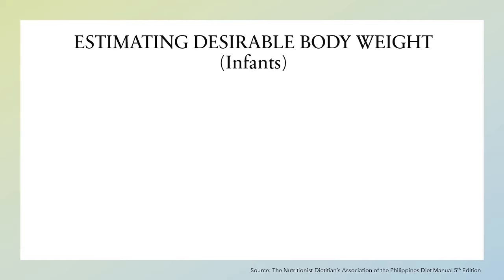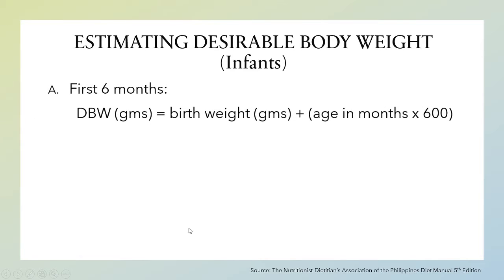There are three ways to calculate the desirable body weight or ideal body weight. This is the first formula: if the infant is in his or her first six months of life, use this formula. The desirable body weight in grams equals birth weight in grams plus age in months times 600.